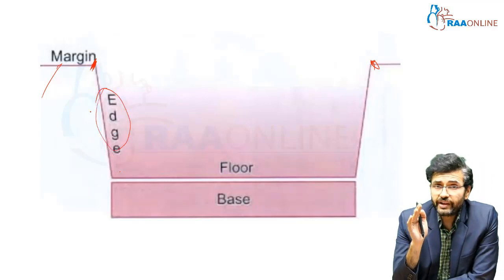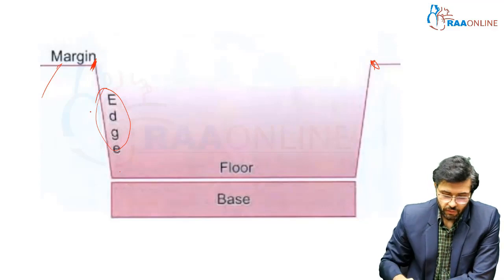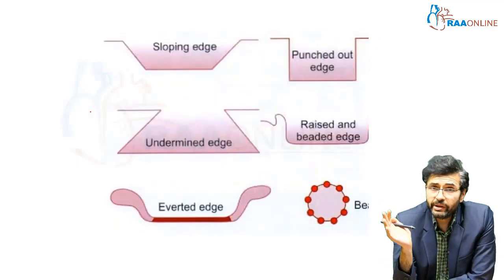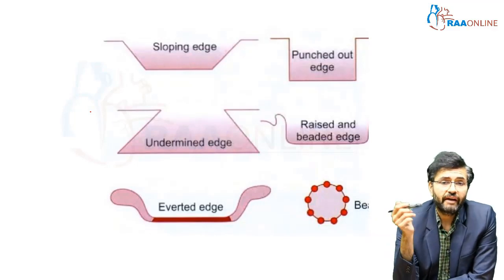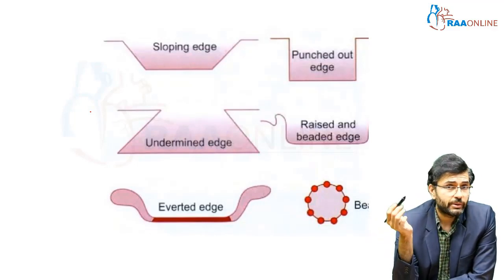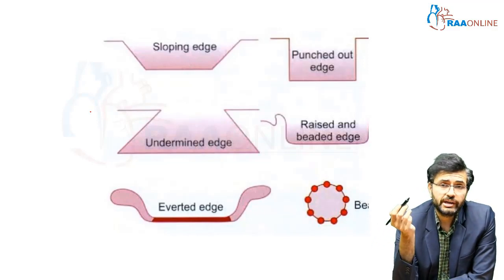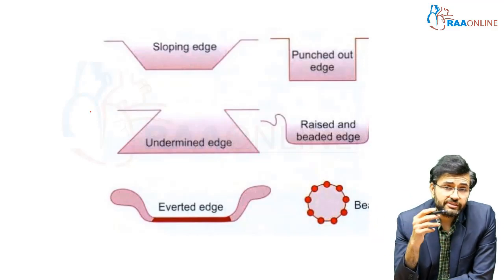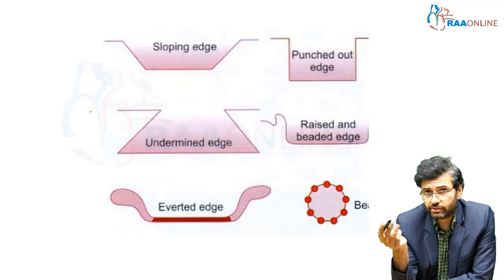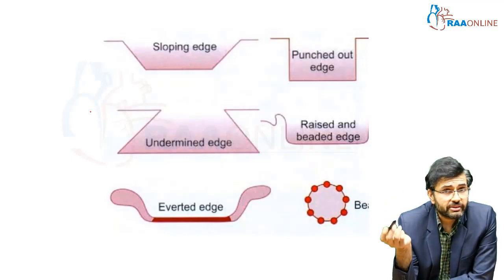There are different types of edges in an ulcer depending upon the underlying condition. Sloping edges are commonly seen in healing traumatic ulcers. Undermined edges are commonly seen in tuberculosis. Punched out edges are seen in trophic ulcers secondary to neuropathy. Raised beaded edges are characteristic of basal cell carcinoma. Everted edges are commonly seen in squamous cell carcinomas.